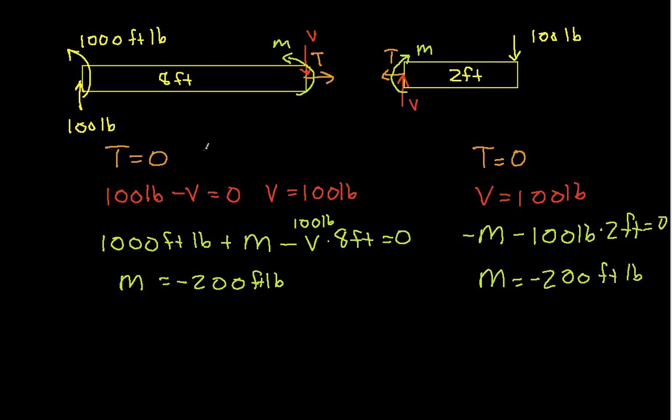which says that M is equal to minus 200 foot-pounds. So what we've shown here is how to find these forces, and it also turns out that it doesn't matter which free body diagram you use after you've made your cut. You'll get the same answer if you use the one on the left of the cut as you will get when you use the one on the right to the cut. So with that we'll stop. Hopefully this has been a useful video.